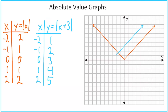When we graph these points, it doesn't look like the V we've been getting for other absolute value graphs. That's because we need to add more values — going further left on the table. Adding x equals negative 3: negative 3 plus 3 is 0, absolute value is 0. Adding x equals negative 4: negative 4 plus 3 is negative 1, and the absolute value of negative 1 is positive 1. So now we've added two more points.